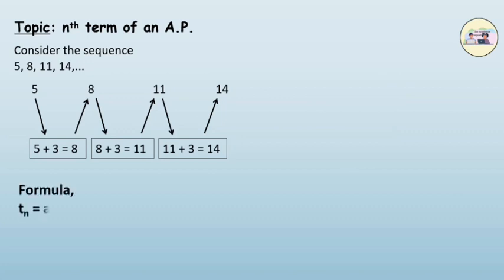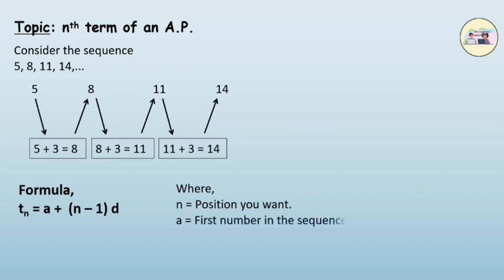Which is t_n is equal to a plus n minus 1 into d, where n is the position you want, a is the first number in the sequence, and d is the common difference. t is the term in the nth position.